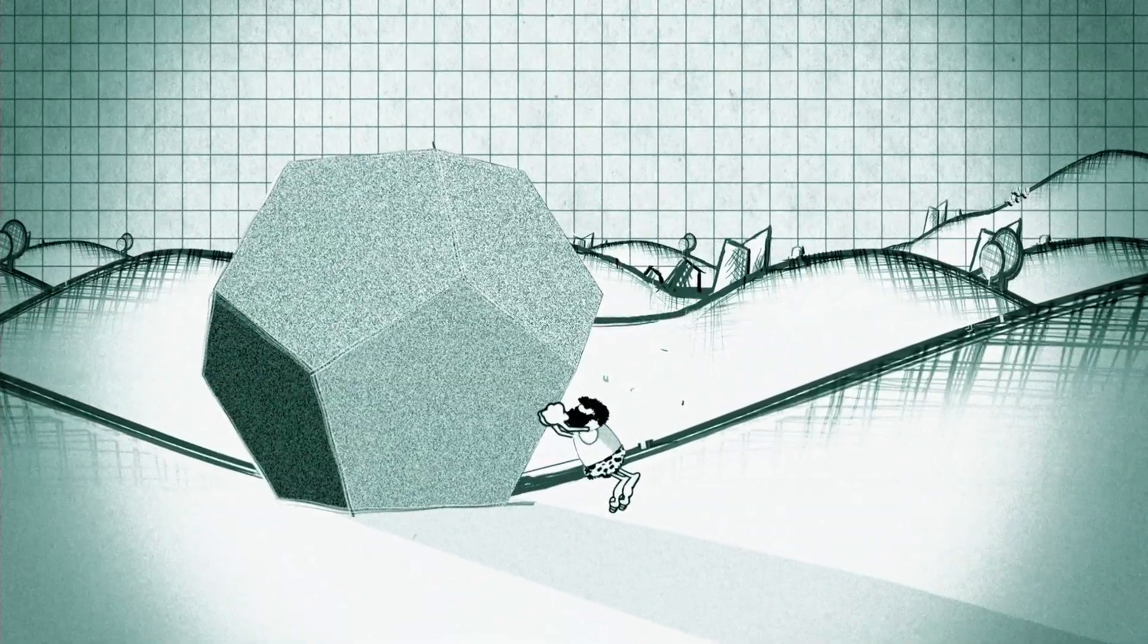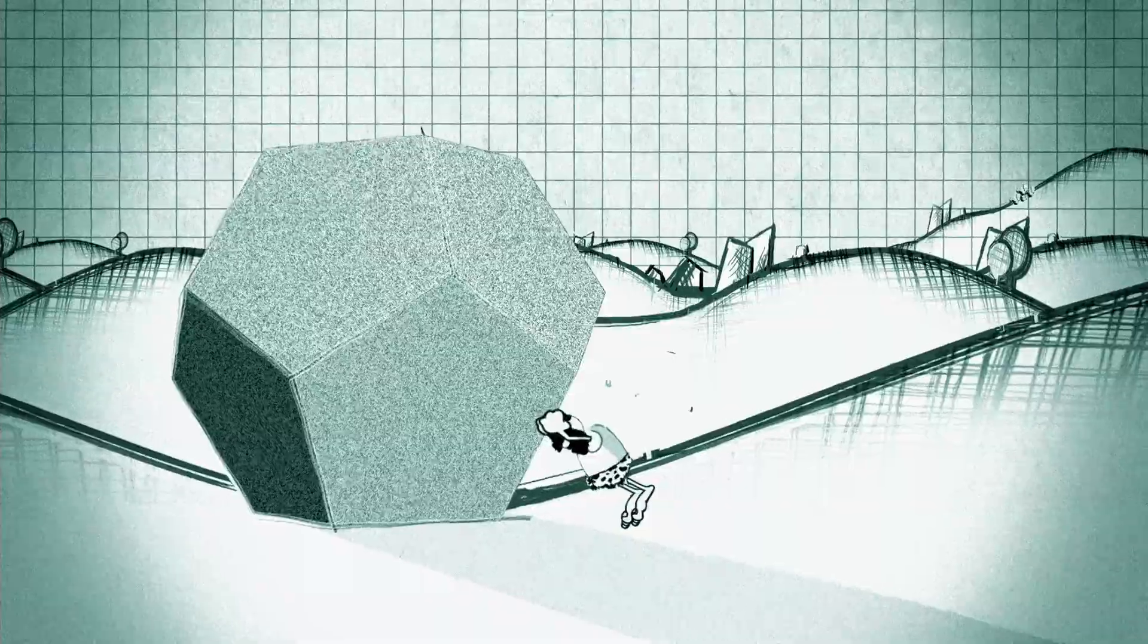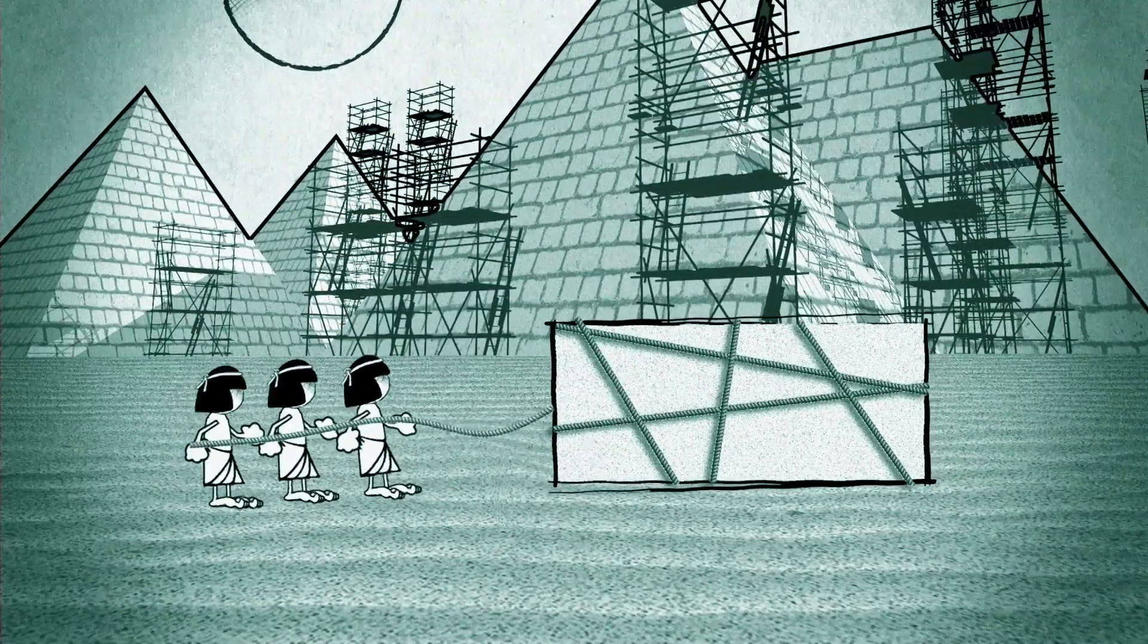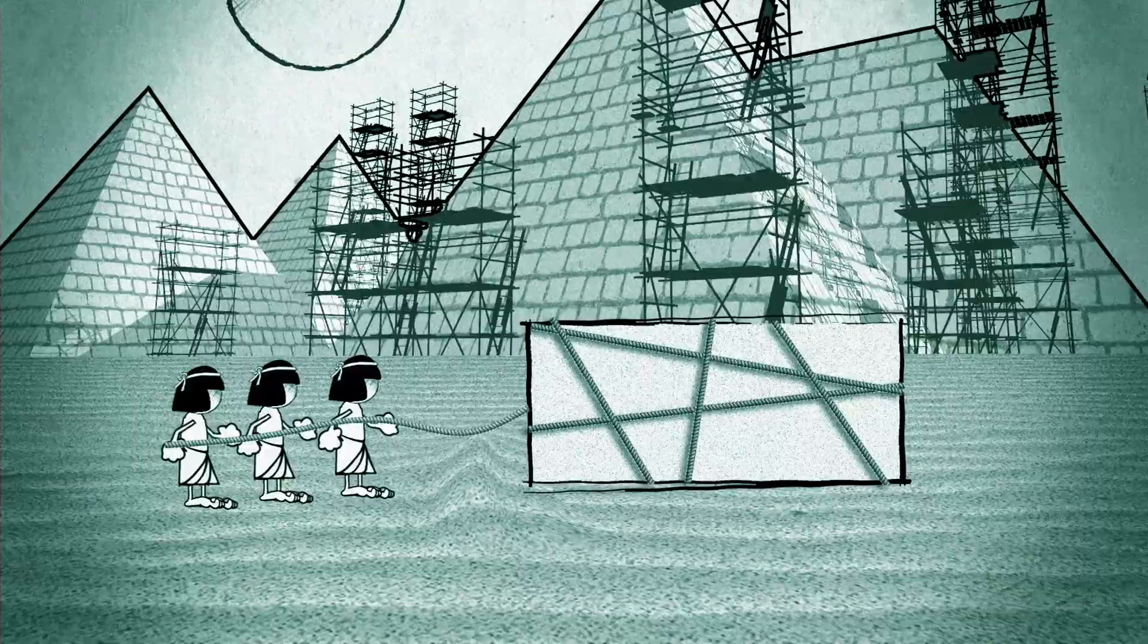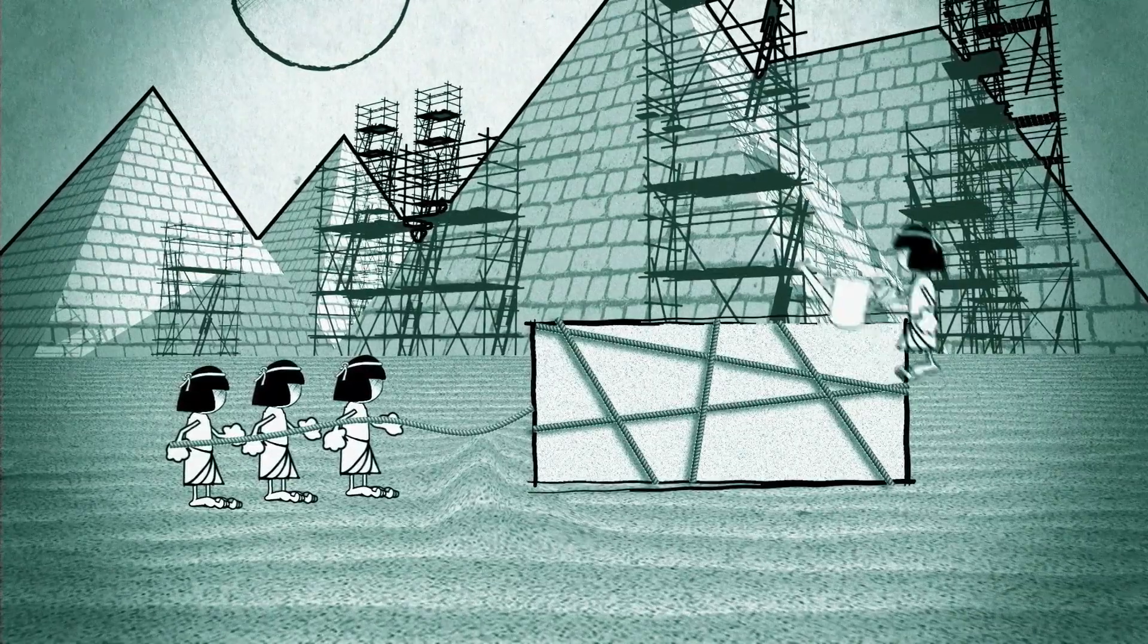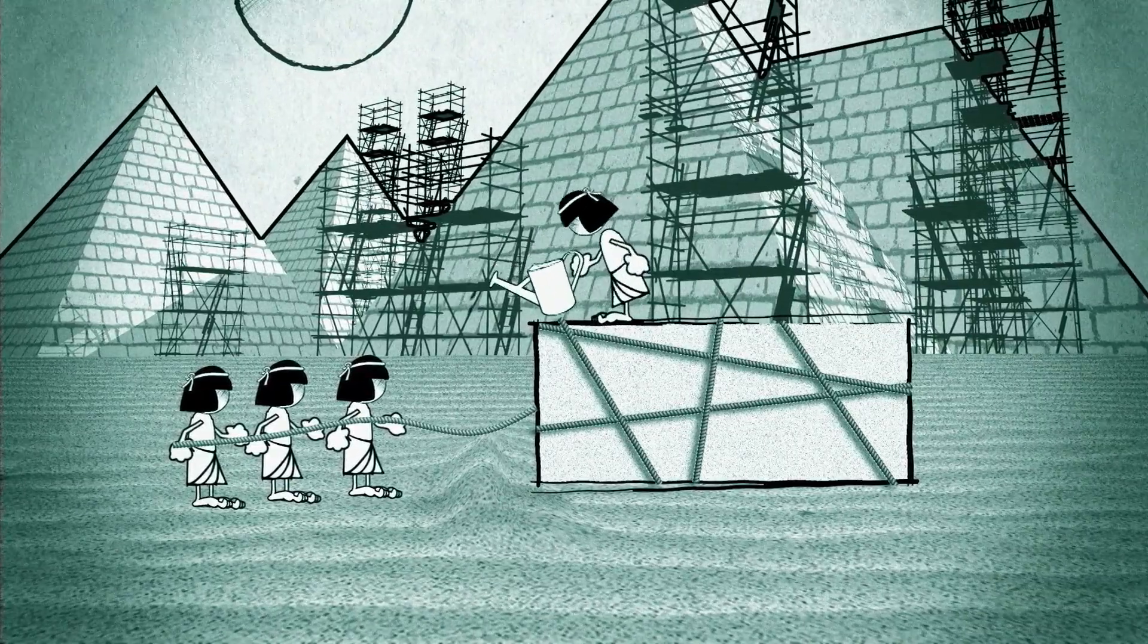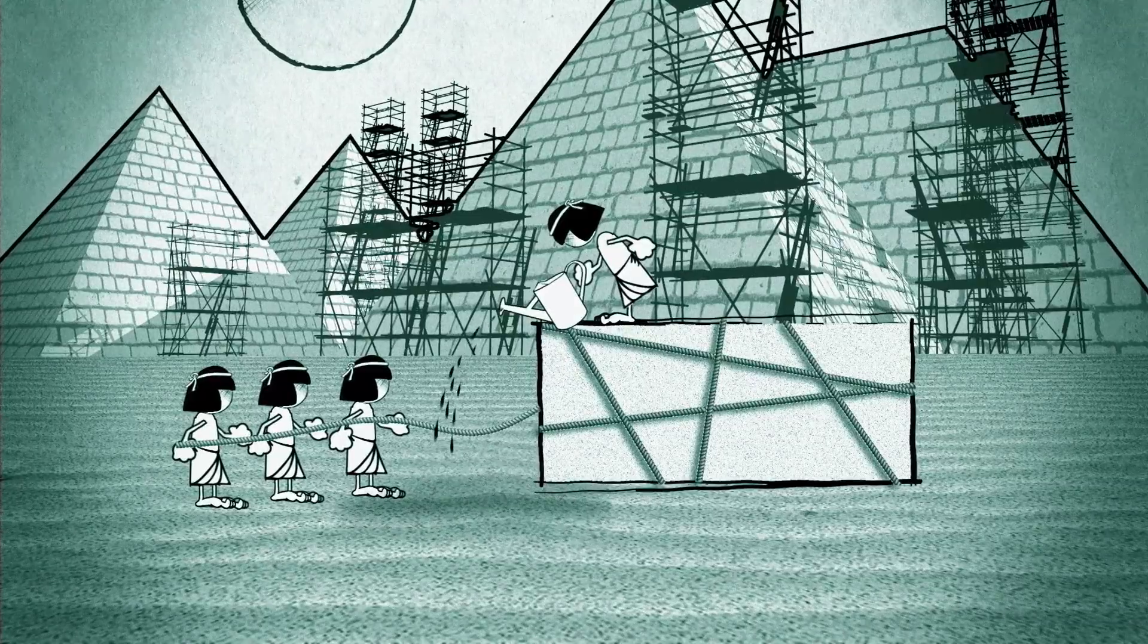Friction has been a sticking point for man for thousands of years. Ancient Egyptians, struggling to slide their building blocks across sand, realized water created a smoother, slipperier surface.